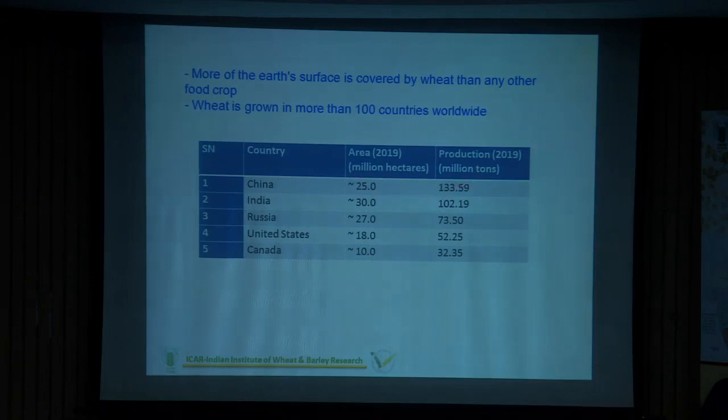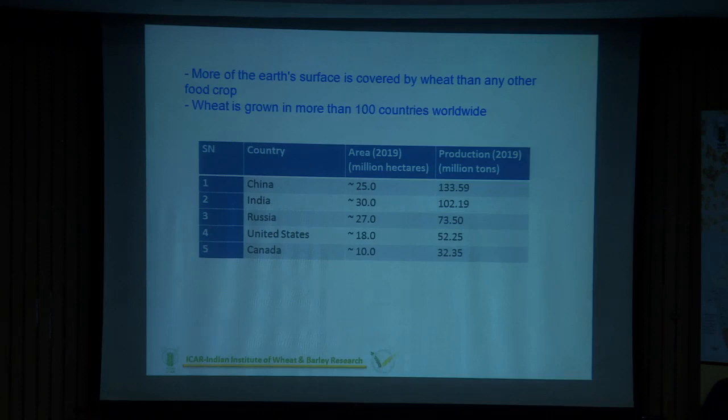China produces more because the climatic conditions and crop season duration in China are longer, giving more time for grain filling and crop growth. More grains will be filled and you will have higher yields. Other genotypes are called winter wheats. In India, we have spring wheats, while China has mostly winter wheats, which is why productivity levels are higher there.